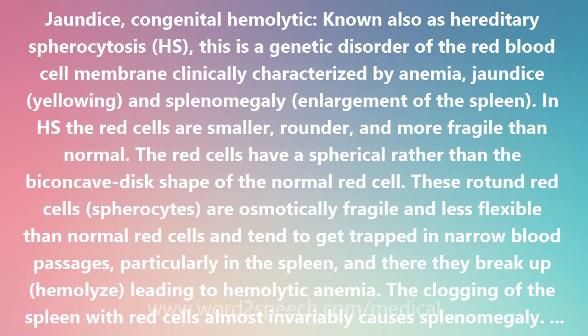The breakup of the red cells releases hemoglobin, and the heme part gives rise to bilirubin, the pigment of jaundice. The excess bilirubin leads to the formation of gallstones, even in childhood. There is also often iron overload due to the excess destruction of iron-rich red cells.